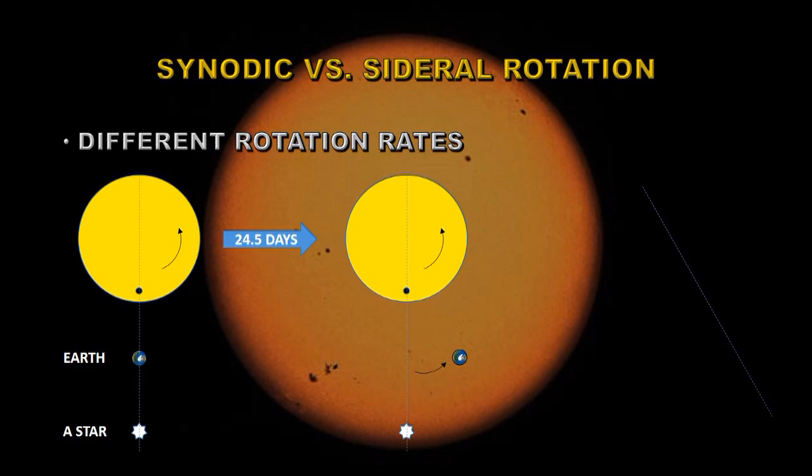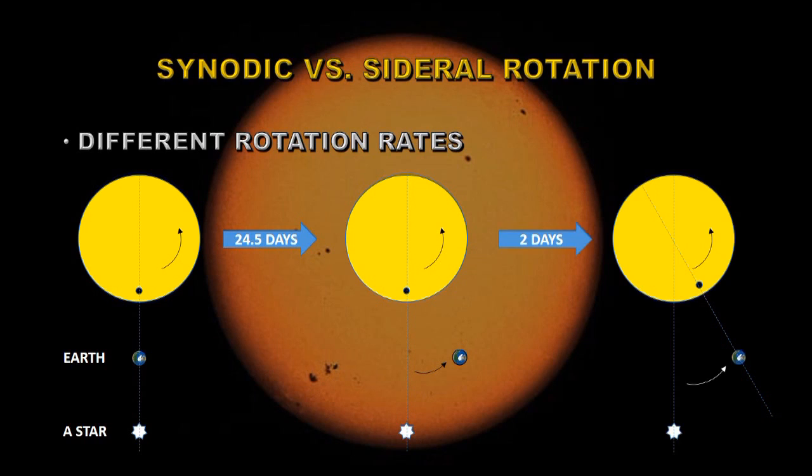Now 24 days later that spot will be back aligned with the distant star. However, the Earth has moved further around in its orbit, so as far as the Earth is concerned, the Sun has not completed its first rotation. That takes yet another two days. So there's a 24 day period which is called the sidereal rate, and there's a 26 day period which is the synodic or Earth-based rotation rate.